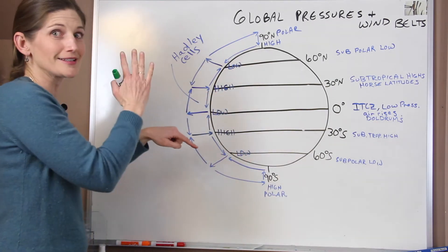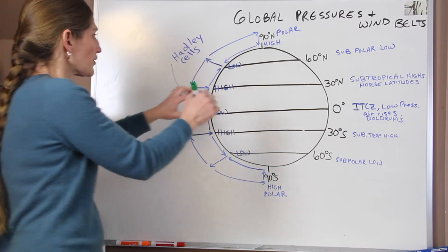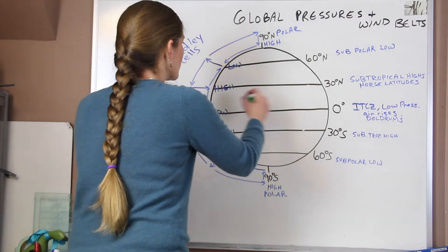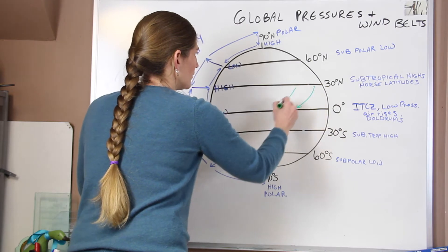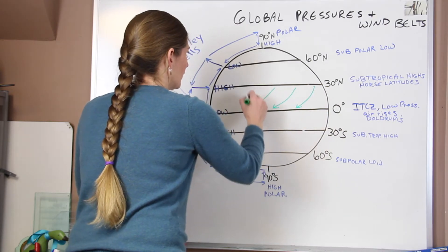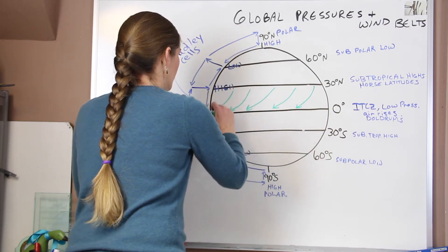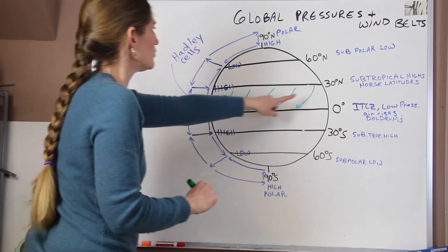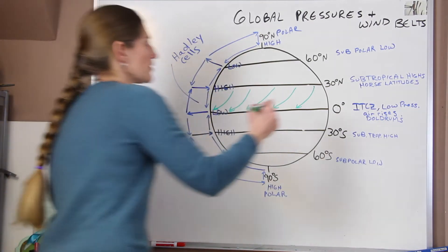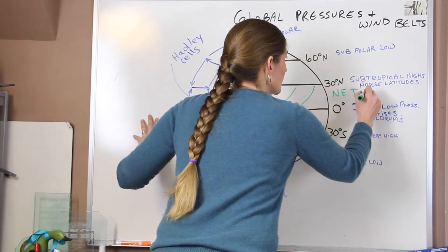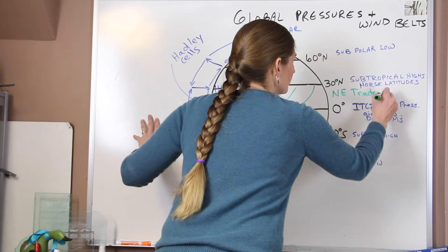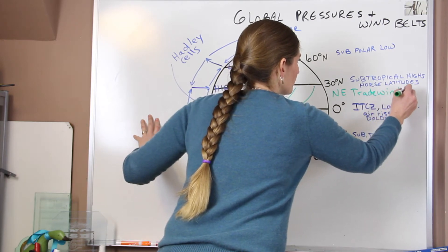And we remember that it's deflected to the right in the northern hemisphere, so anything above the equator. So if we have a high here, it's going to come down to the equator. This zone right here, these are the northeast. I'm going to write NE, and then trade winds.